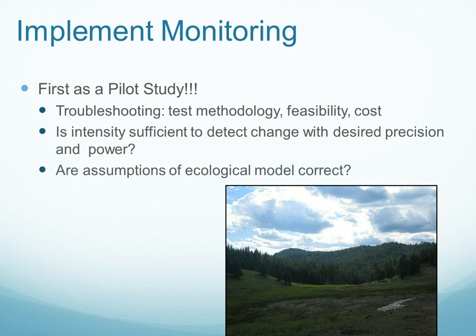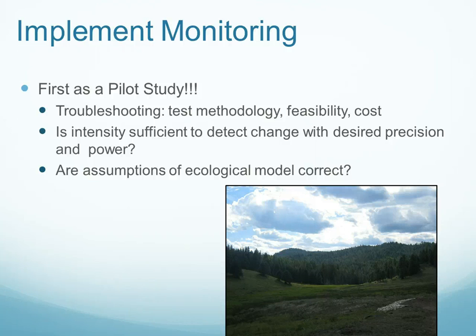We have to monitor and implement the monitoring. The first thing we do is implement our monitoring as a pilot study, which is a very critical step that should not be overlooked. It is important for troubleshooting — we get to test our methodology and how feasible our plan is, and we also have a reality check with the time and costs involved. We get some information about the precision of our measurements and can determine whether the intensity is sufficient to detect change with the desired precision and power. Finally, we have a moment to step back and make sure that the assumptions of our ecological model are correct.